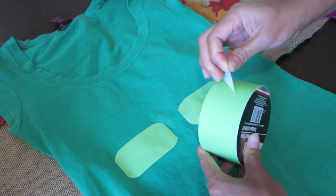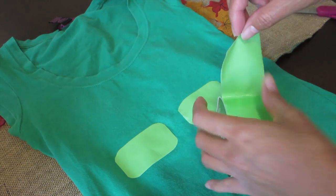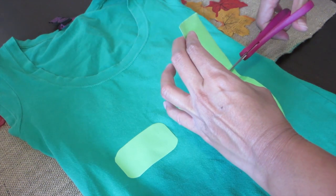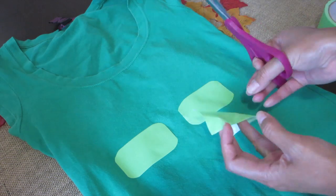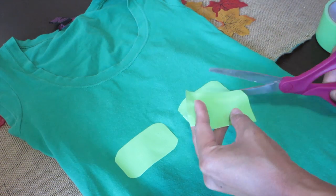So for the ninja turtle shirt, I just grabbed one of my old green shirts. This green tape is from the Dollar Tree as well. So just cut off a rectangle and then you are gonna shape it as an oval to make our ninja turtle abs.